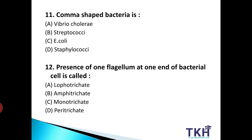Next, question number 11: comma-shaped bacteria — कौन सा bacteria हमें comma-shaped दिखाई देता है? Option A: Vibrio cholerae. Option B: Streptococci. Option C: E. coli. Option D: Staphylococci. तो हमारा answer है Option A: Vibrio cholerae, that looks like a comma-shaped bacteria.